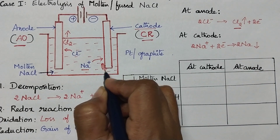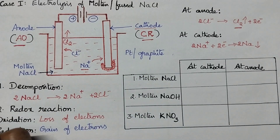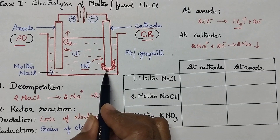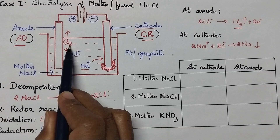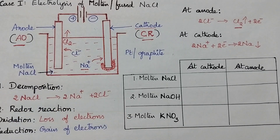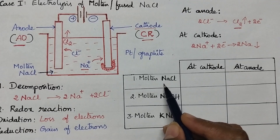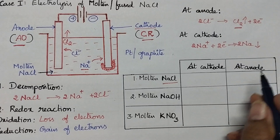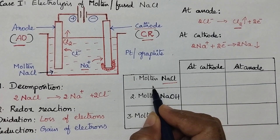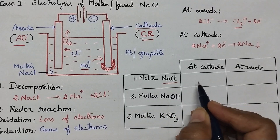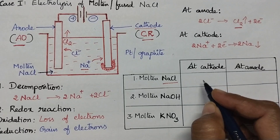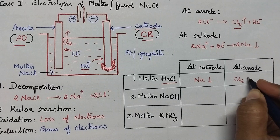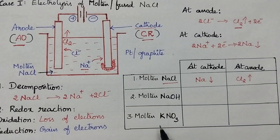So finally the sodium metal gets deposited at the cathode. During the electrolysis of molten or fused NaCl, sodium metal gets deposited at the cathode and chlorine gas is liberated at the anode. So from this example it is very clear that simply by seeing the electrolytic solution we can predict what are the products formed at the cathode and at the anode. Let us apply this to other electrolytic solutions.